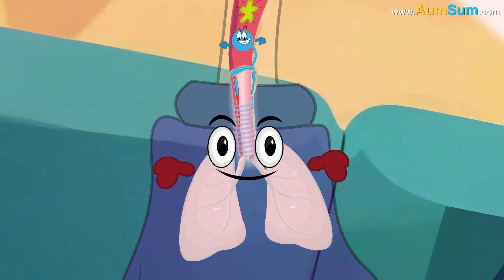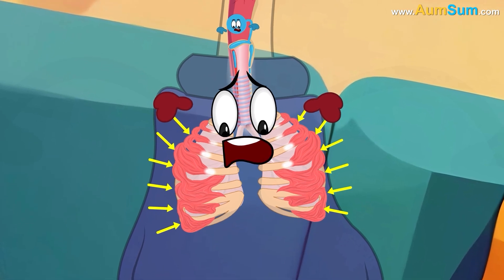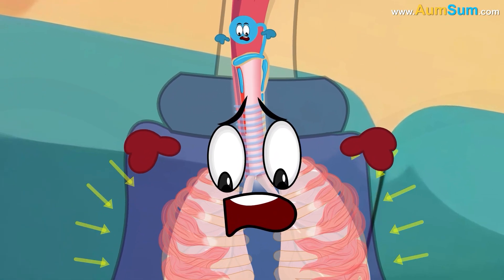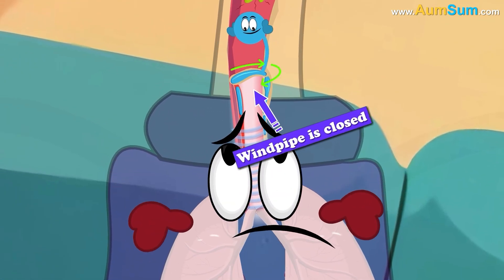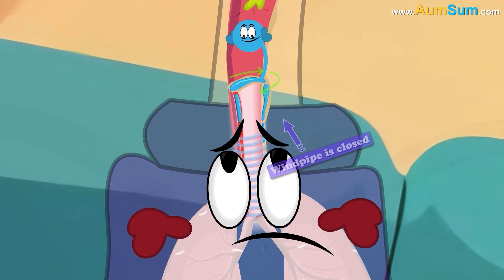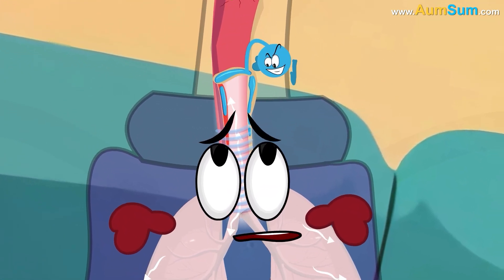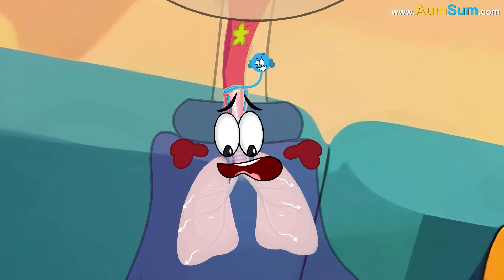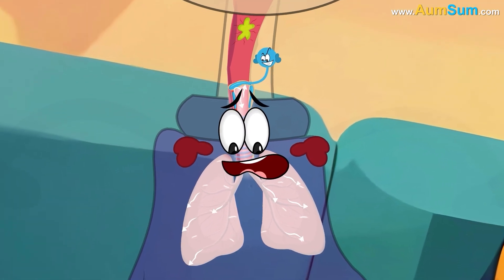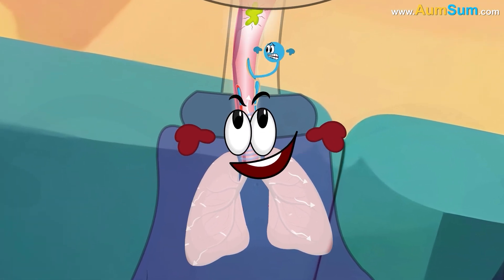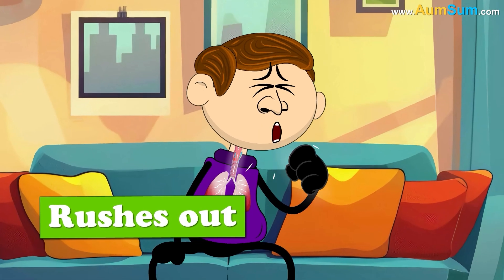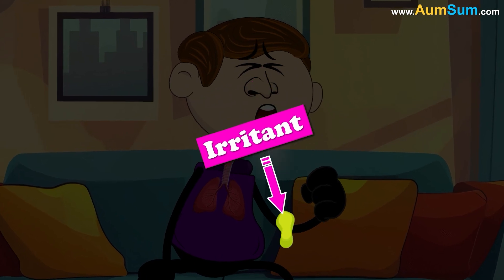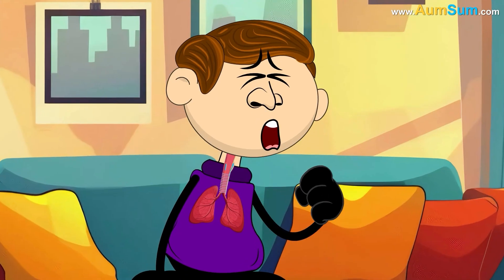Then our rib muscles begin to contract, thus putting pressure on the lungs. But as the windpipe is closed, the air can't move out, so more pressure builds up. Finally, the epiglottis opens and air forcefully rushes out, carrying the irritant and thus producing a cough.